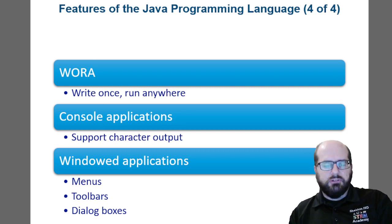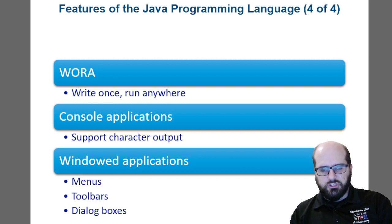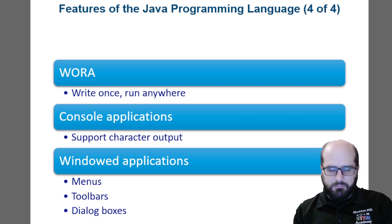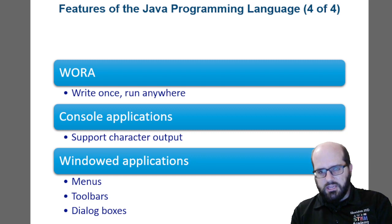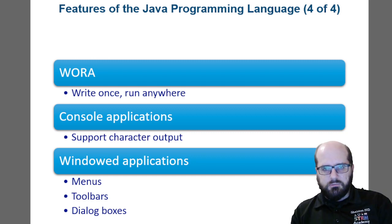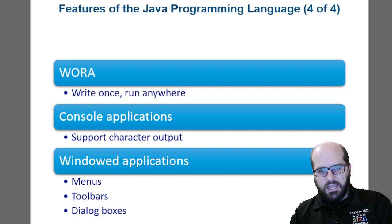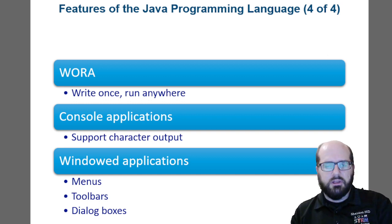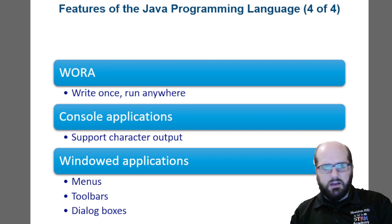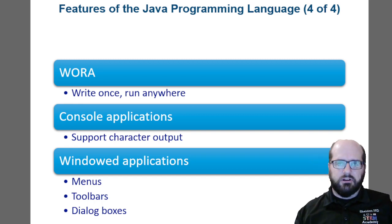The console applications of Java support character output. Almost every IDE allows this, unless you're working in just a text editor. The windowed applications — the libraries developed from the initiation of Java — allow menus, toolbars, and dialog boxes.